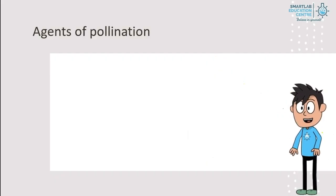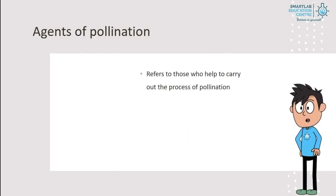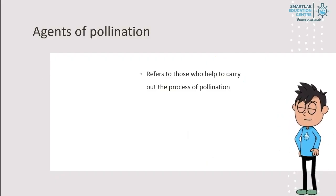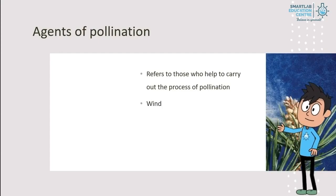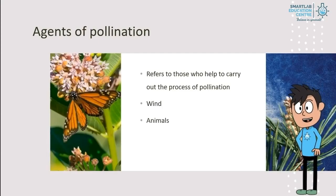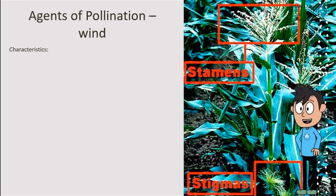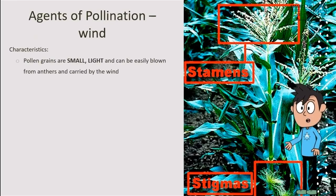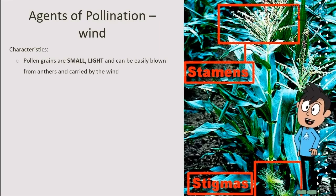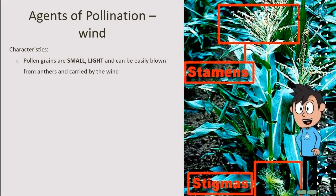Agents of pollination refers to those who help to carry out the process of pollination. This includes wind and animals. Let's look at some characteristics of flowers that are pollinated by wind. The pollen grains of these flowers are small, light, and can be easily blown from anthers and carried by the wind.